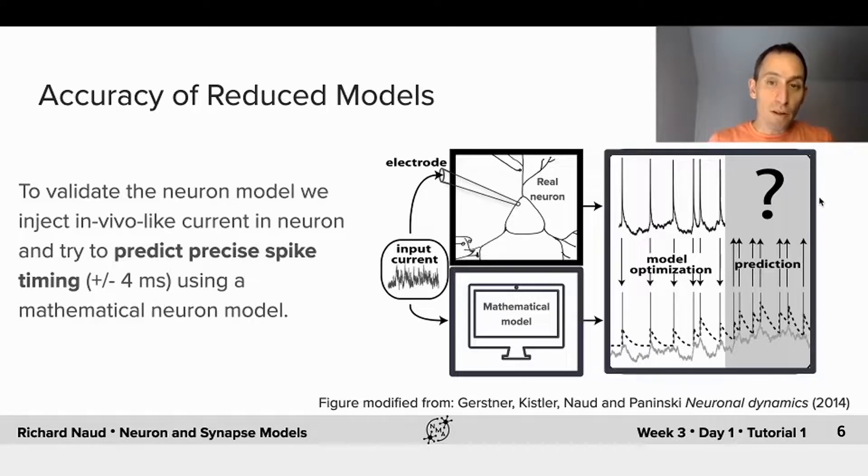Our metric will be having the correct spike timing, plus or minus 4 milliseconds. We normalize that total number of correct spike time predictions, by a measure of intrinsic variability, because neurons are not perfectly deterministic. You give them the same input multiple times, and they won't always respond at the same time. So we take this into account.